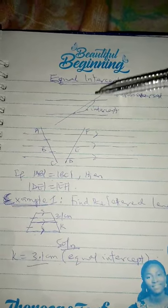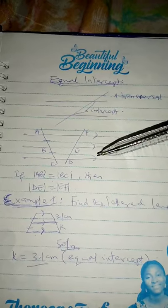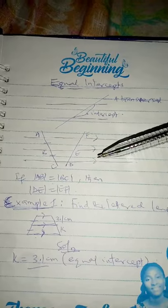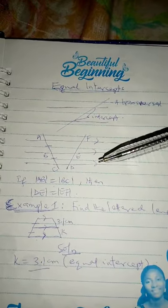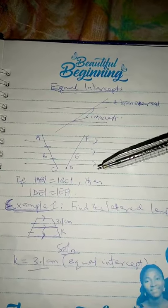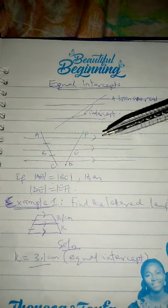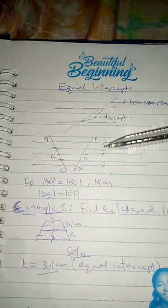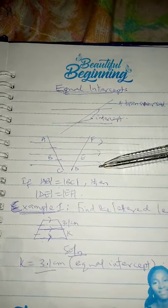Now, we are talking about equal intercepts. Before you can generate equal intercepts, there will be at least three parallel lines — three, four, or more parallel lines. Then, a transversal or some transversals running over them. Like in this diagram here, see these three lines? They are parallel — that's why you have seen these arrows.